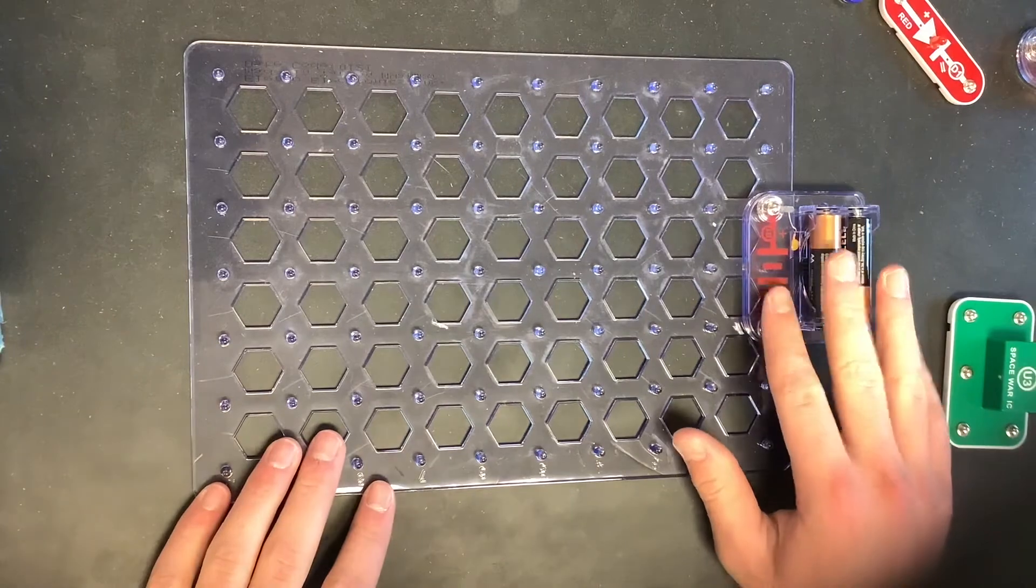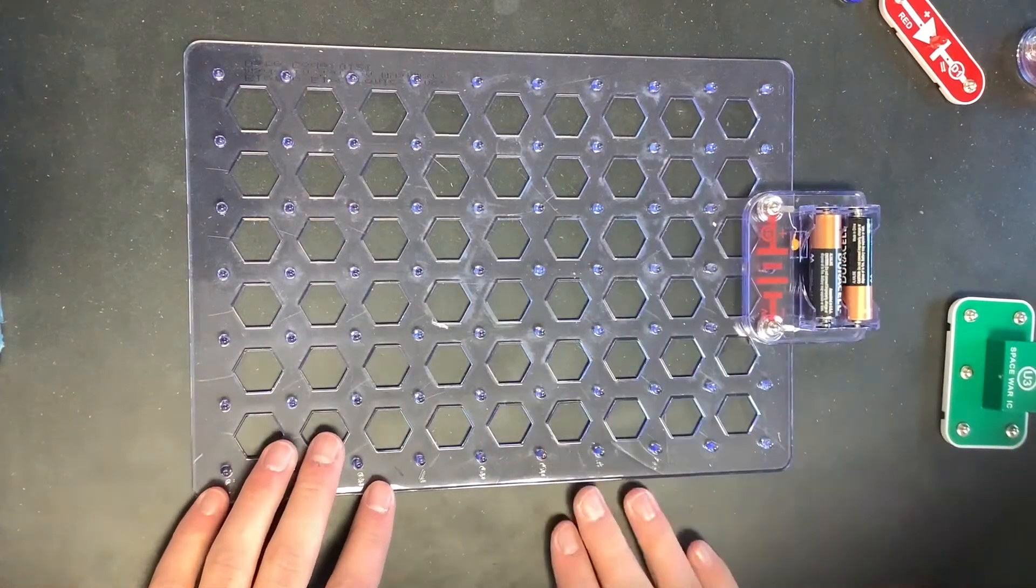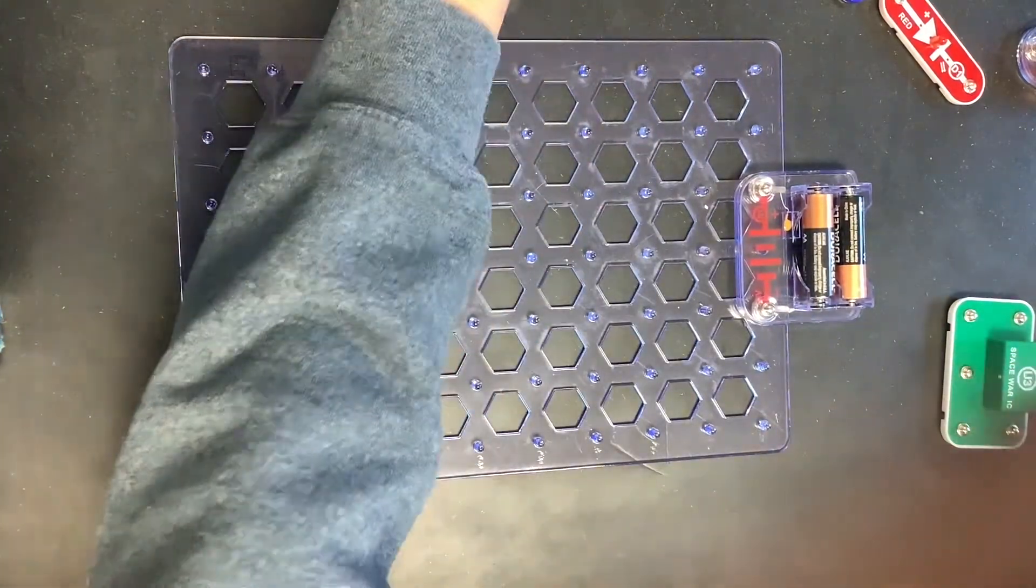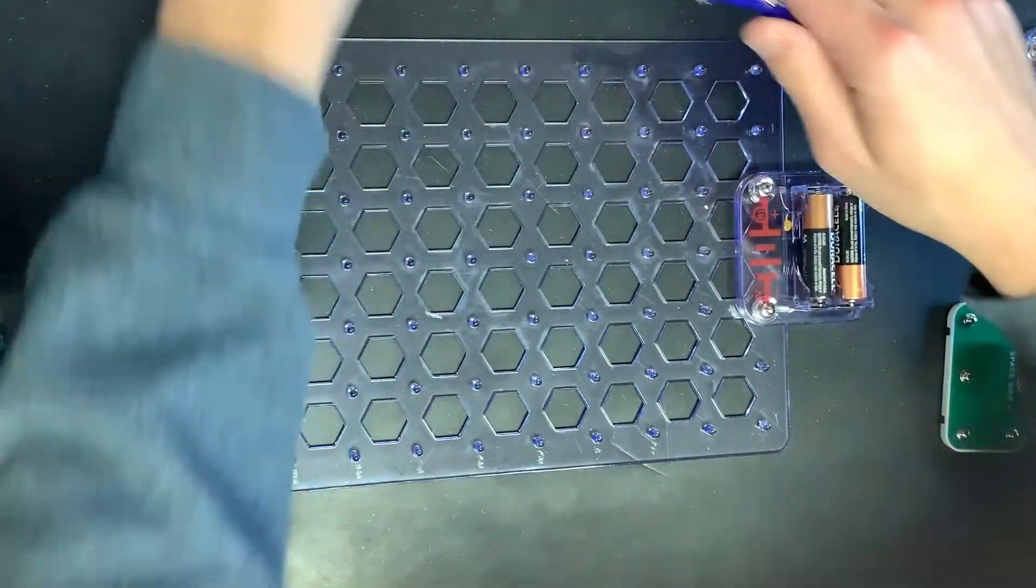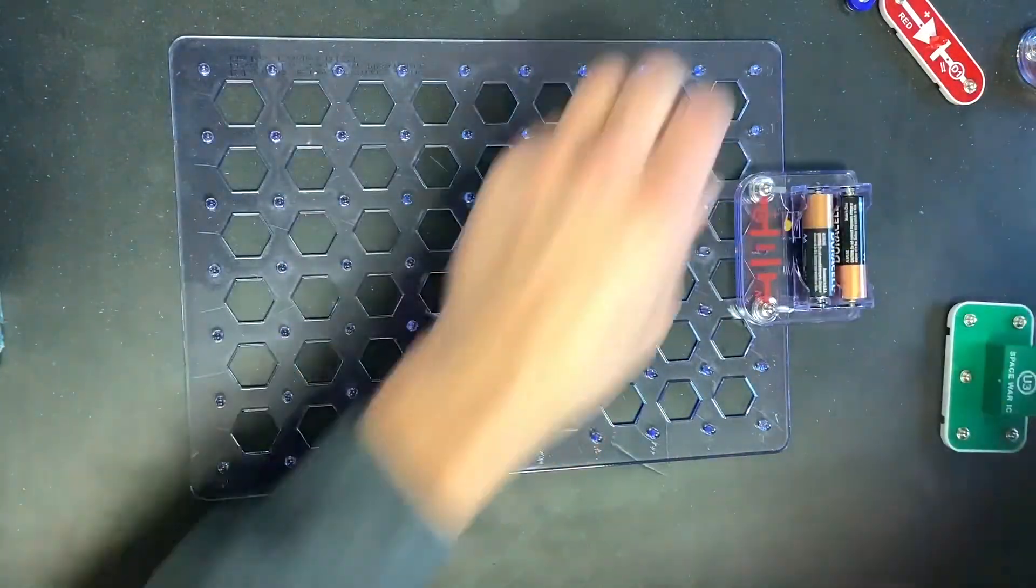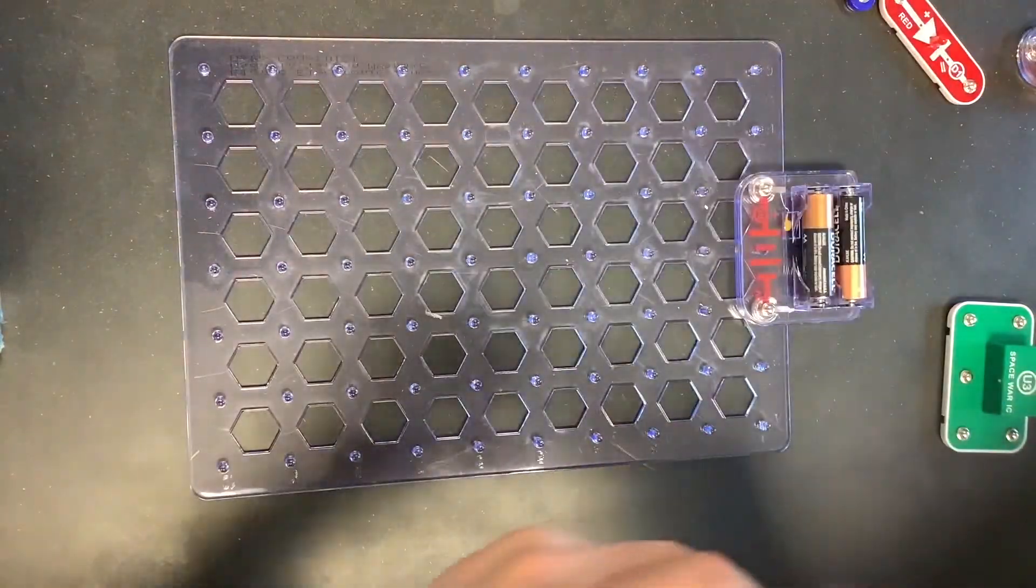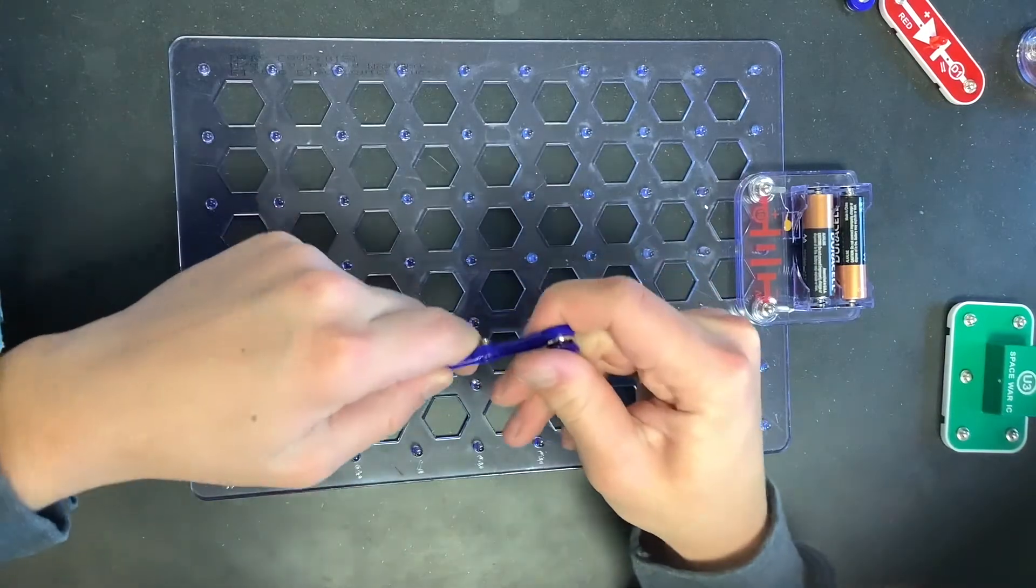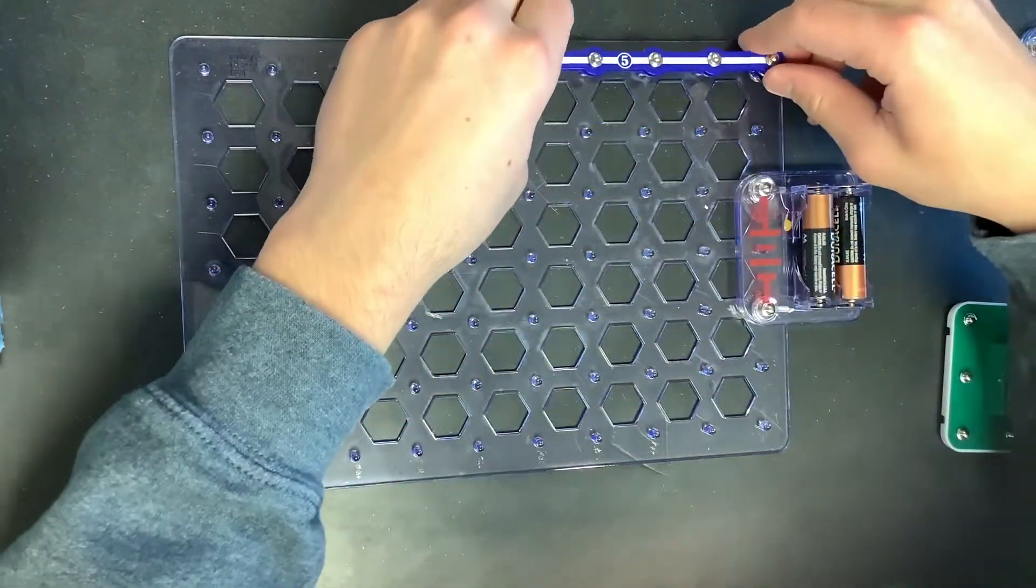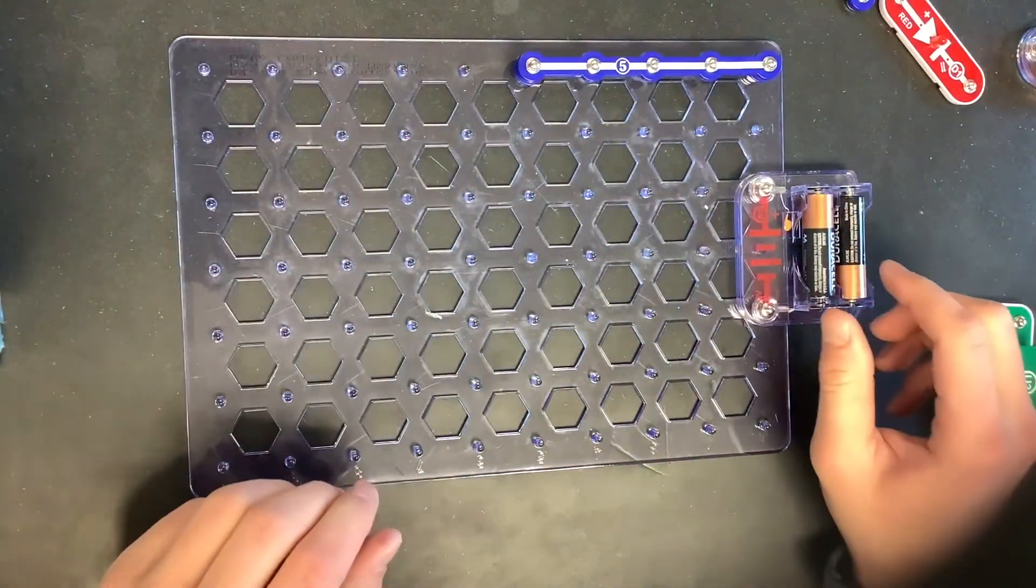So we're going to start off by connecting our battery pack right here. And we're going to add in a five connector piece right here. But we're going to go ahead and put two little one-piece connectors on the bottom side of it.